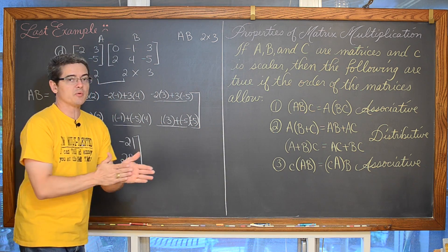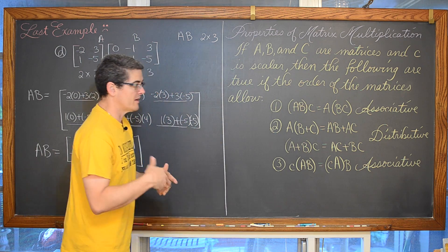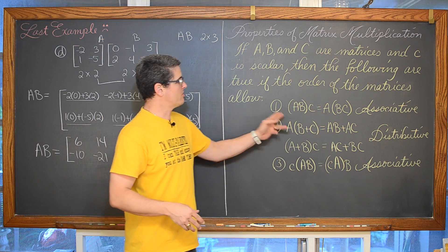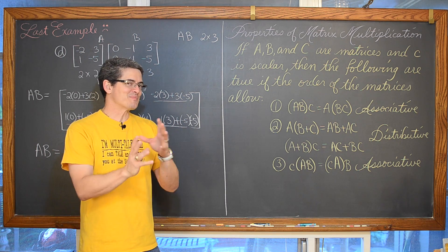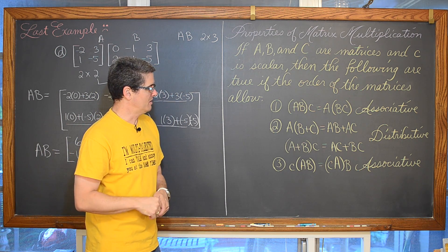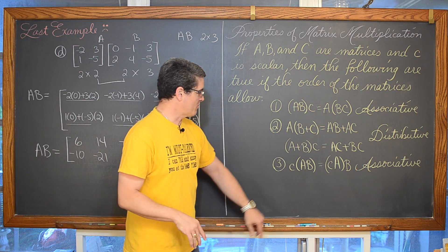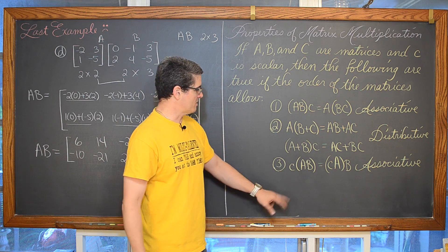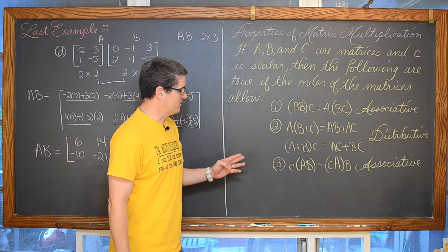Now, the properties of matrix multiplication. If A, B, and C are matrices and C is a scalar, then as long as the orders allow: the associative property holds — you can regroup parentheses, but you cannot change the order of the matrices. Multiplication is not commutative with matrices. The distributive property holds, and a scalar applied to the product AB can equivalently be applied to matrix A first and then multiplied by matrix B.